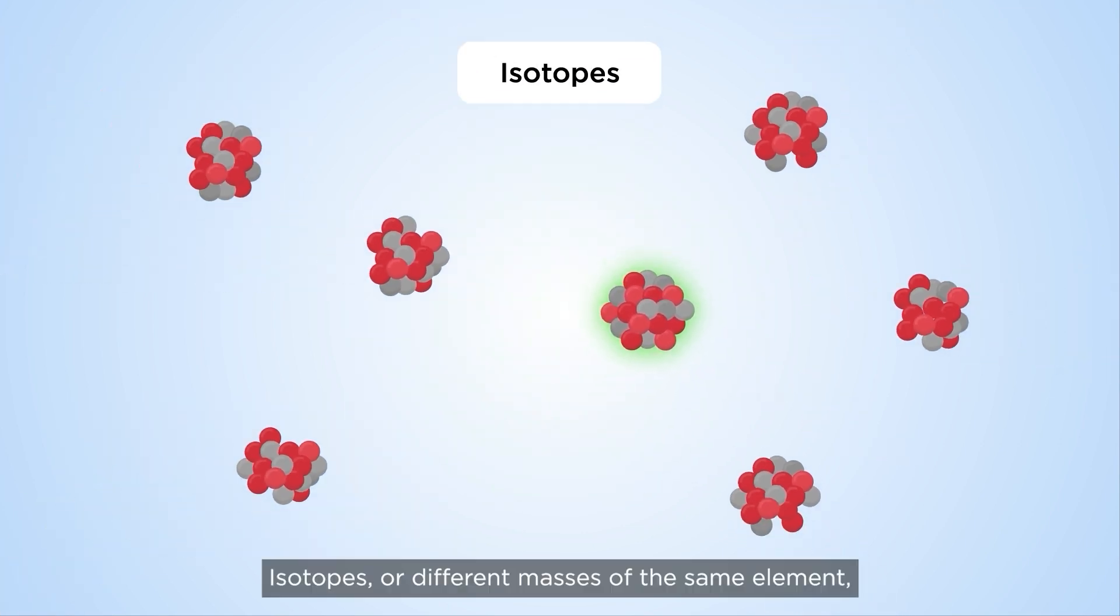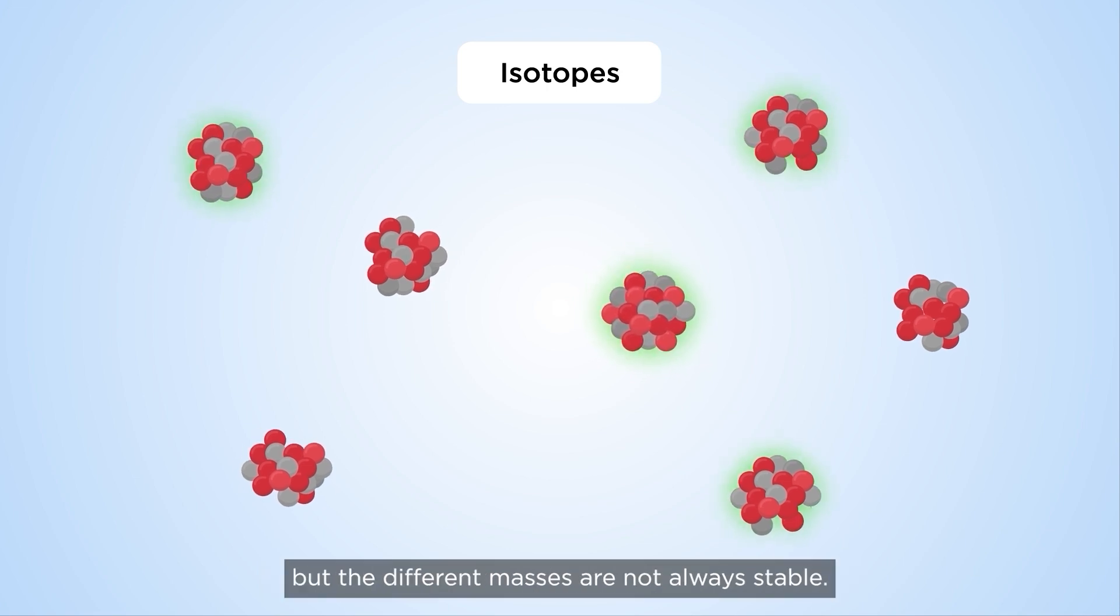Isotopes, or different masses of the same element, have the same chemical behavior, but the different masses are not always stable.